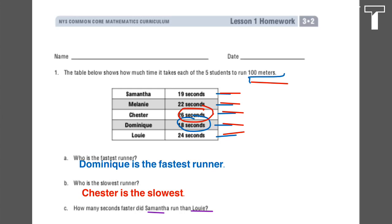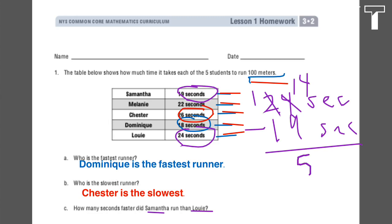So we're going to go up here and we're going to look for Samantha, which is 19 seconds, and Louis, who's 24. So we'll bring those off to the side, and we'll subtract those out. And we're going to end up with five seconds. So my statement down below, Samantha ran five seconds faster than Louis.